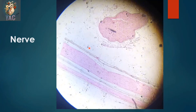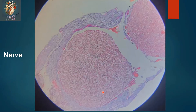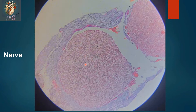This is a slide at lower magnification of the nerve fiber, showing the longitudinal section of the nerve and the cross section. At higher magnification of the cross section, you can see a bundle of nerve fibers covered by the epineurium, and in the center you can see cross-sections of axons covered by the neurilemma.